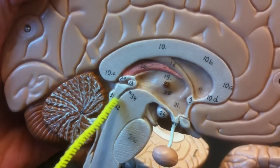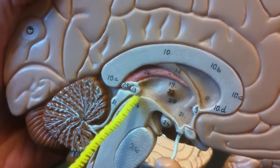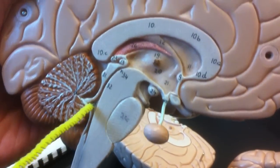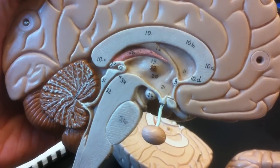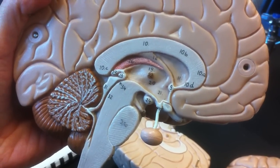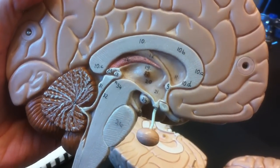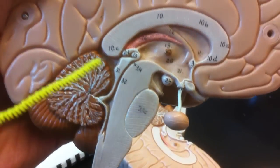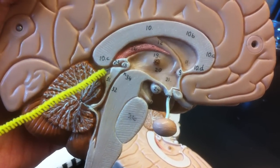The cerebral aqueduct connects the third ventricle to the fourth ventricle. The corpora quadrigemina has two structures: the superior colliculi and the inferior colliculi.